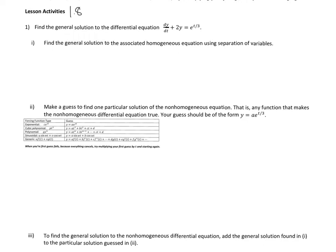So this is a non-homogeneous differential equation. I'm going to put it into standard form by moving the 2y to the other side: dy/dt equals negative 2y plus e to the t over 3. This is non-homogeneous because of the function that has only t's added on to the end. This is a three-step process to find the solution to a non-homogeneous differential equation.